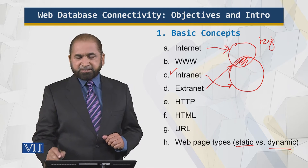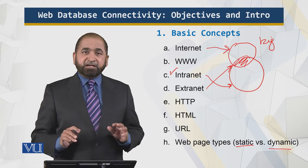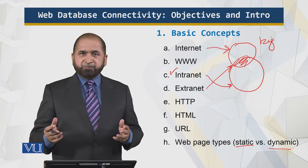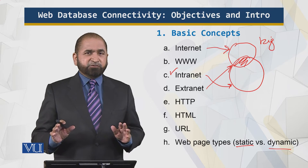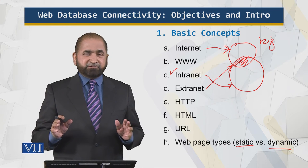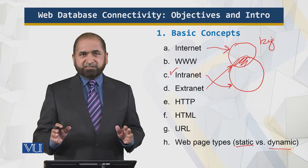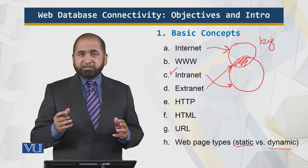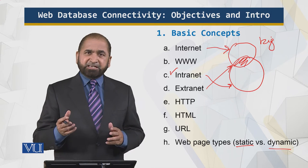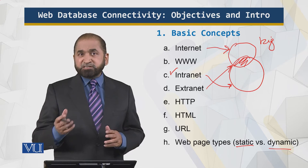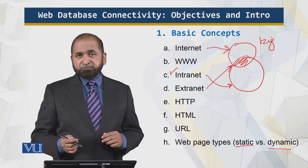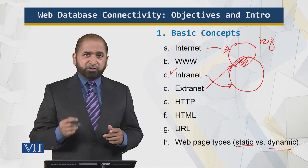Now there are two types of web pages: static versus dynamic. Static pages are ones where you type something into a web page, store it, and that's it. Whenever you click or read it, its contents will never change. That is a static page — not very interesting or useful, unless of course it's something like history, which never changes, or for policies. But policies can change also, so you have dynamic pages, which are generated on the go.